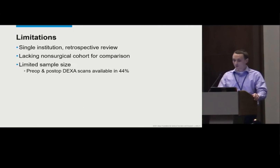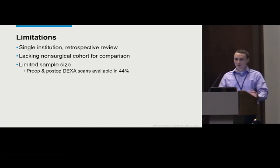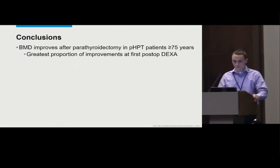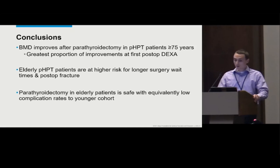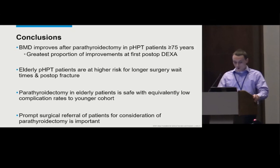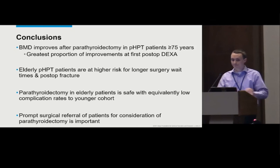Our study is limited by its single-institution retrospective design, lack of a non-surgical cohort for comparison, and the fact that pre- and post-operative DEXA scans were available in only 44% of patients. In conclusion, patients 75 and older can benefit from parathyroidectomy, with the greatest proportion of bone density improvements at the first postoperative DEXA scan on average 16.8 months after surgery. These patients were more likely to experience a longer delay to surgery, and despite bone health improvements, they had higher fracture rates, suggesting the multifactorial nature of falls including physical activity level and polypharmacy. Overall, parathyroidectomy in the elderly is safe with low complication rates comparable to a younger cohort. Prompt surgical referral is important, as older age alone should not be considered a contraindication to surgery.